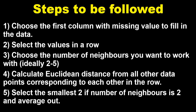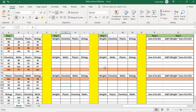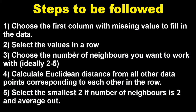First, we need to choose the column with missing values to fill in — I'll take the maths column. Then select the value in the row which is missing. After that, choose the number of neighbors you want to work with — ideally two or three, depending on your data. Next, calculate the Euclidean distance from all other data points corresponding to each row. Finally, select the smallest two distances — if using k=2 neighbors, take those two points and average them. If using k=3, take the smallest three and average them.